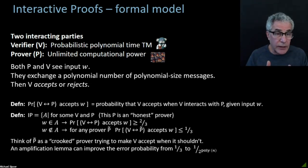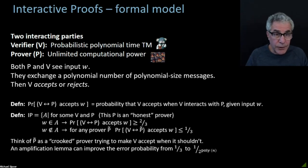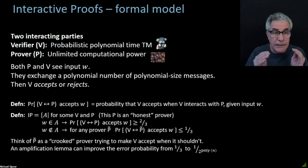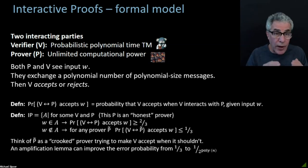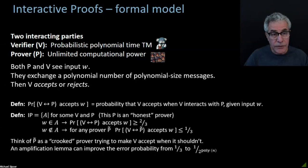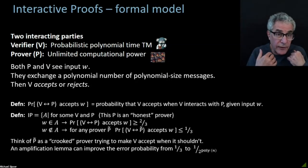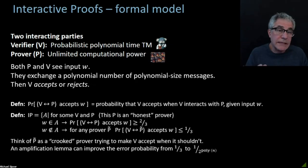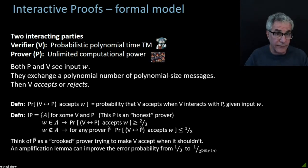For strings in the language there exists a certificate — there is a proof that you're in the language. The question is: if you look at the best possible prover, does there exist a way to convince the verifier that the string is in the language? So the best possible way, when you're in the language, is going to end up with the verifier accepting with high probability. When you're not in the language, the best possible way is still going to end up with low probability. When I talk about best possible, I'm trying to maximize the probability that the verifier is going to end up accepting.